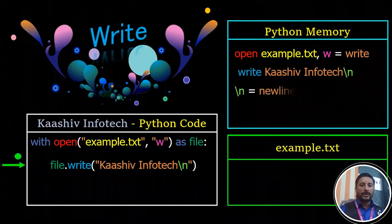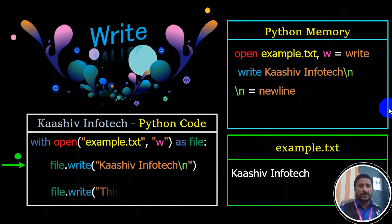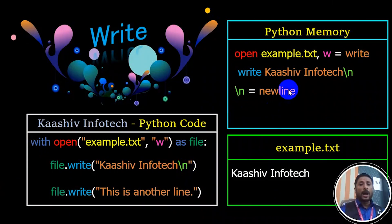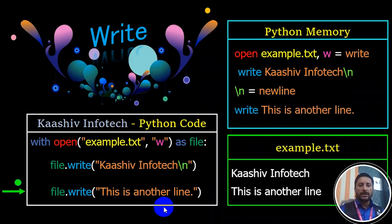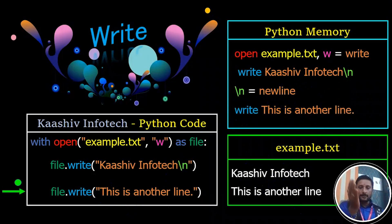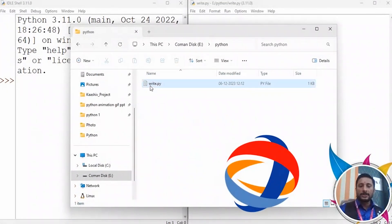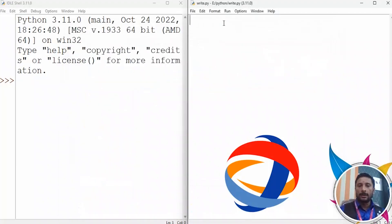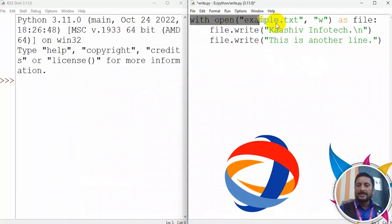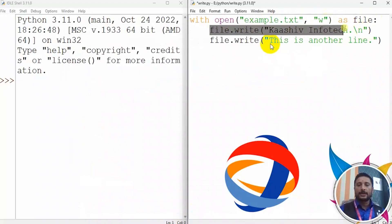Then it will be written to the file. We write 'this is another line' to the file. The example.txt file will contain that content. Now we have a Python file ready with that written content.